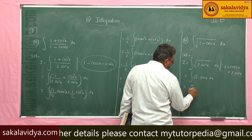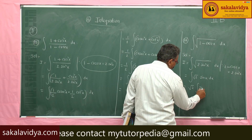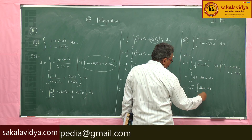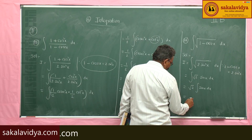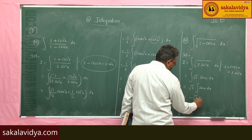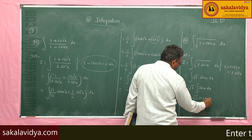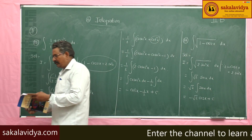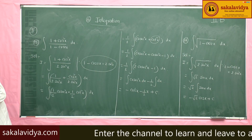Taking √2 as common: √2 times the integral of sinx dx. The integral of sinx dx is -cosx. So the answer is -√2·cosx plus constant of integration. Now let us move to the next problem, the 17th problem.